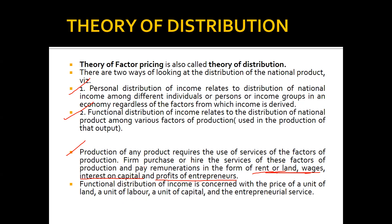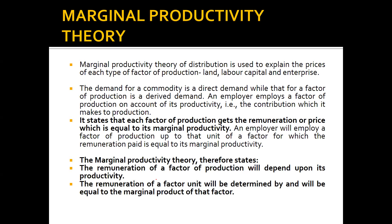Functional distribution of income is concerned with the price of a unit of labor, a unit of capital, and entrepreneur services. The marginal productivity theory explains the prices of each type of factor of production — land, labor, capital, and entrepreneur. The demand for a commodity is a direct demand, while the demand for a factor of production is a derived demand.